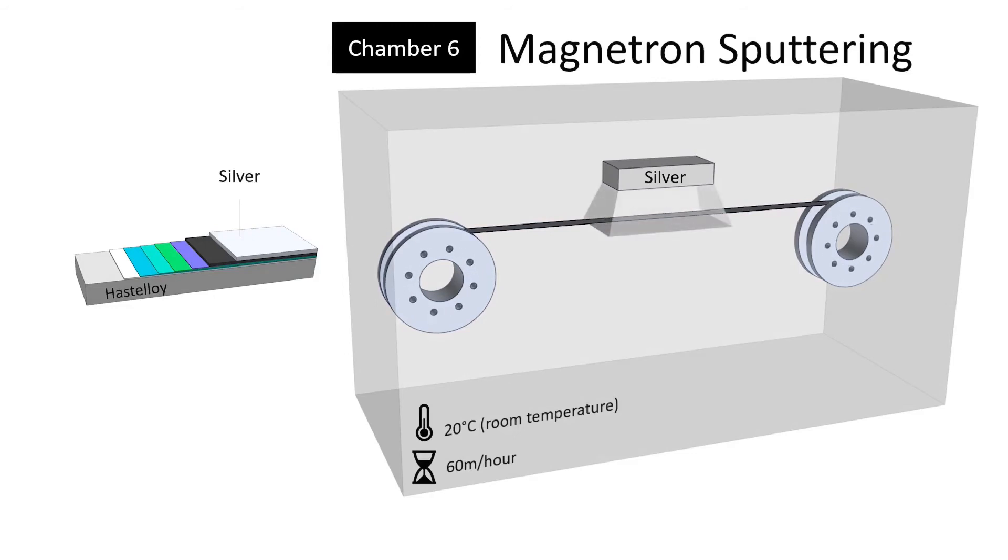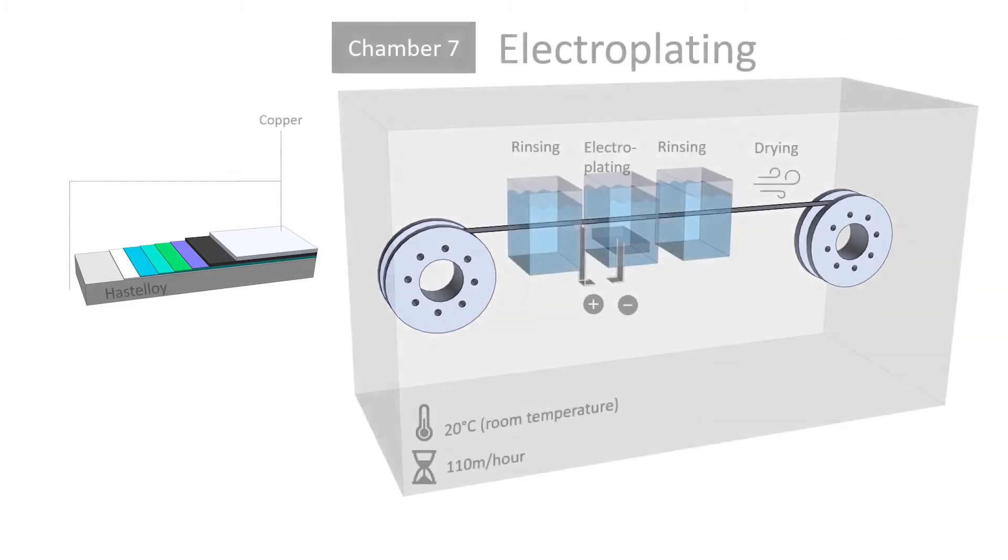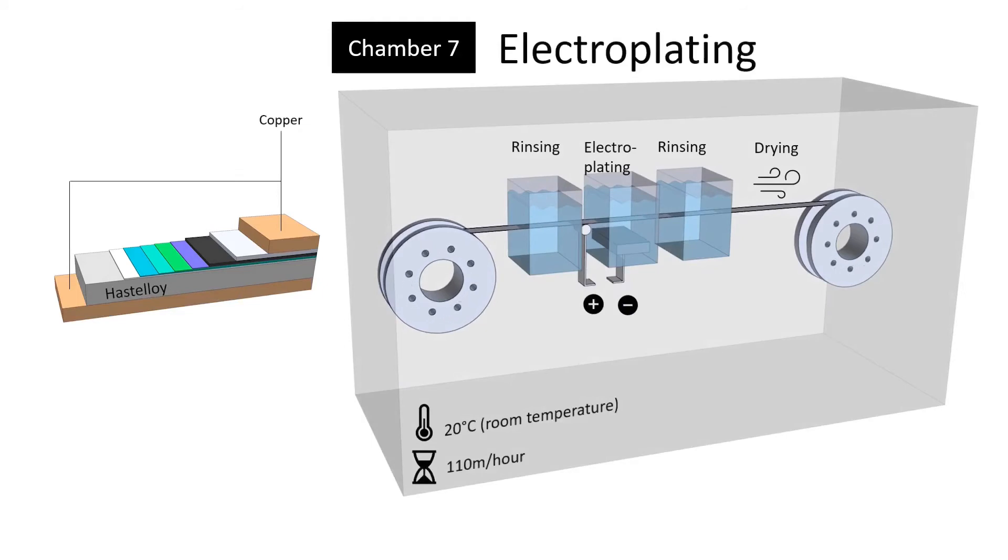A silver layer is then deposited to protect the high-temperature superconductor layer. This layer also serves as a low resistivity electrical contact. A copper layer is then electroplated in a chemicals bath on both sides of the tape. This layer acts as a shunt layer.